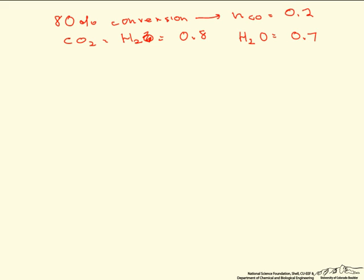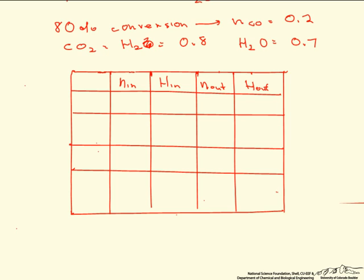So the next thing that we want to do is to draw our enthalpy table. One thing to make sure that you do is you put your references on, and as I said it's carbon in its solid form, H2 in its gas, O2 in its gas, at 25 degrees C and 1 atmosphere.